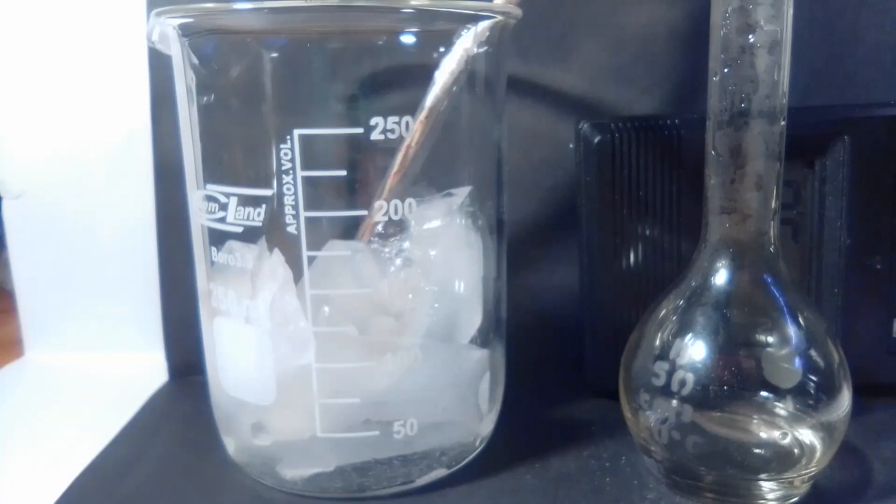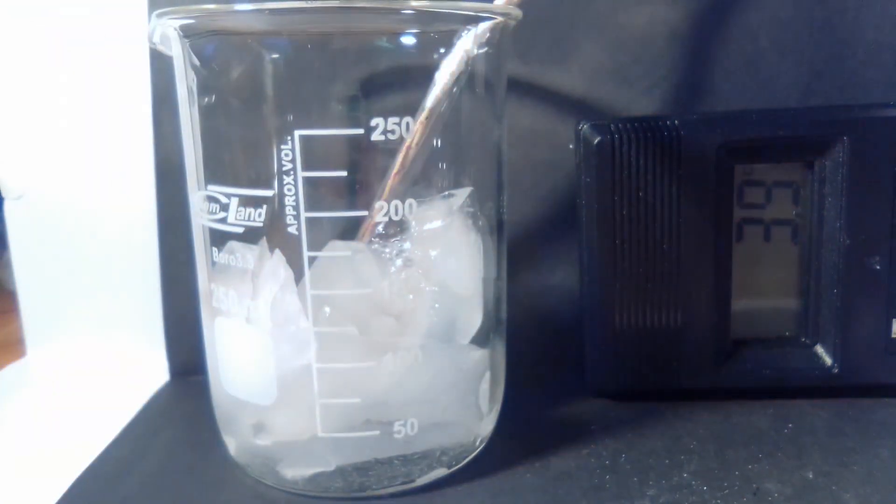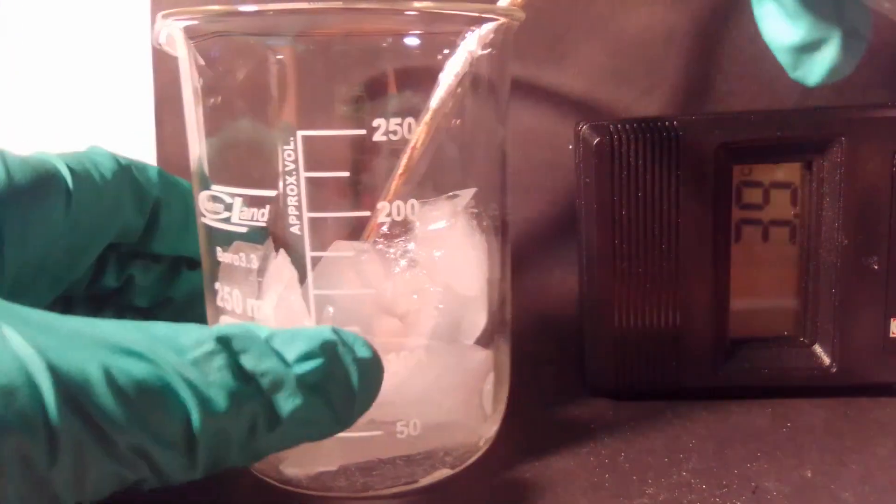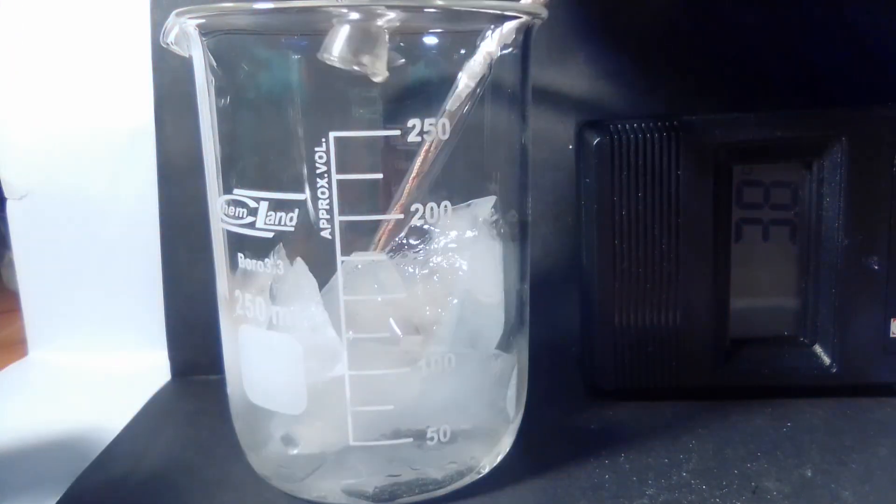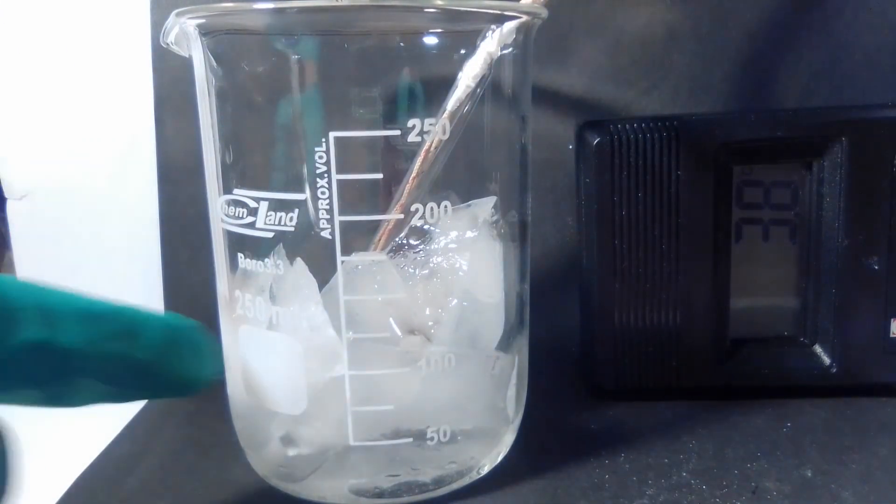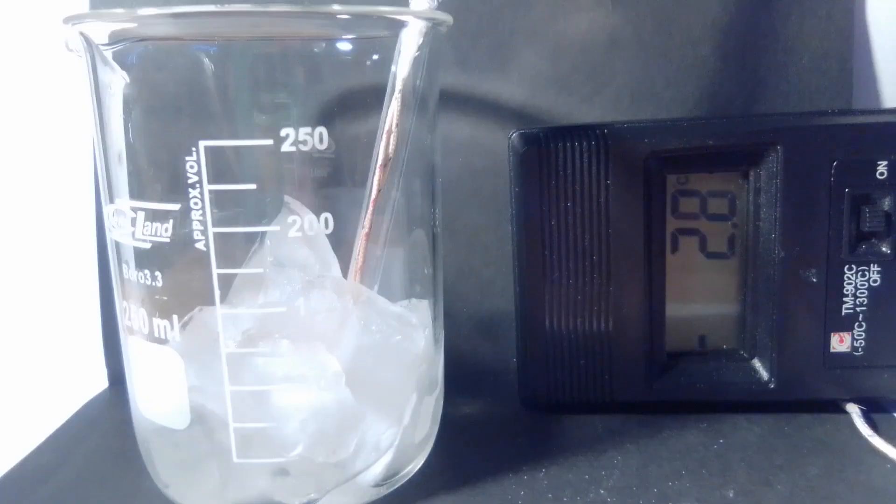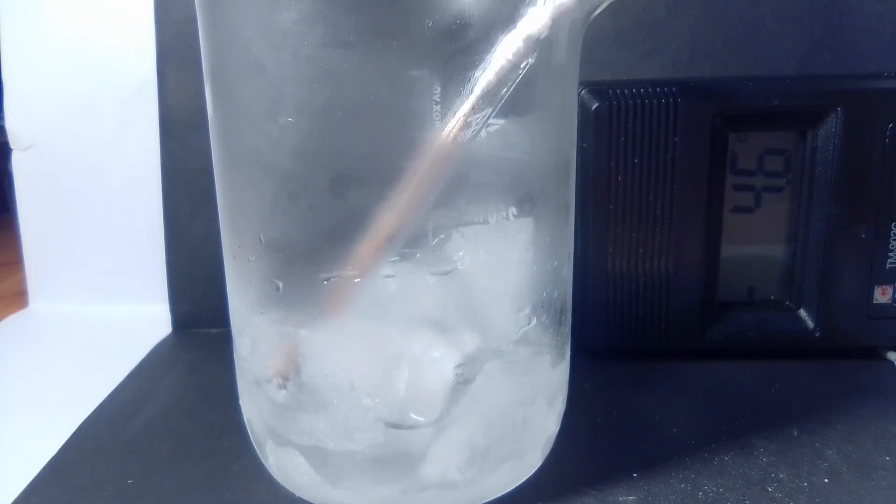So now we come to our diazotization process, when we turn the amine group into diazonium salt. We got some hydrochloric acid right here, ice and a thermometer. I'm going to add the hydrochloric acid to the ice, and now we're going to add our yellow mixture to this hydrochloric acid. Temperature has to be kept below 4 Celsius, so let's prepare our diazonium salt.